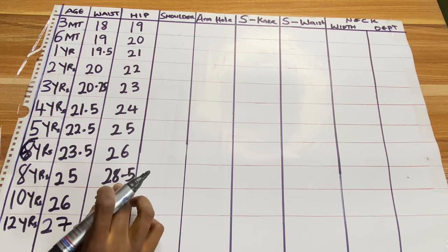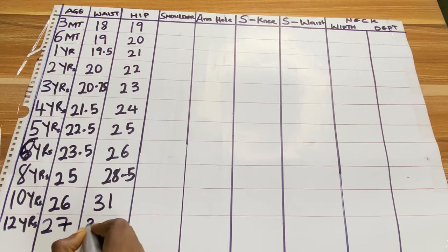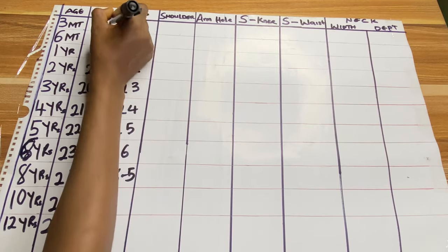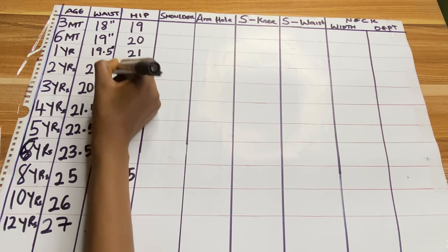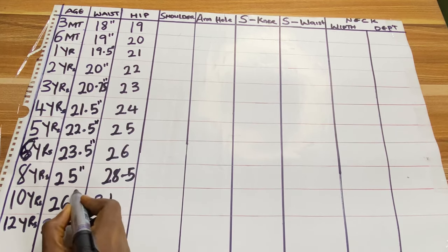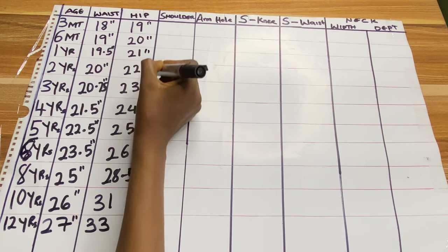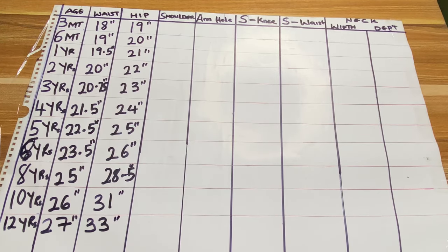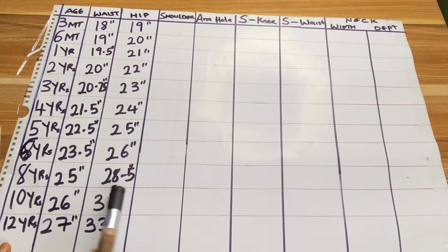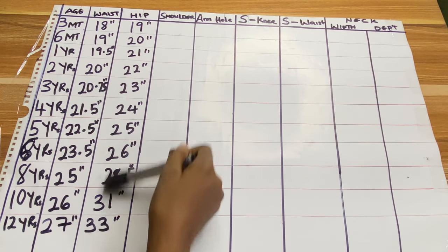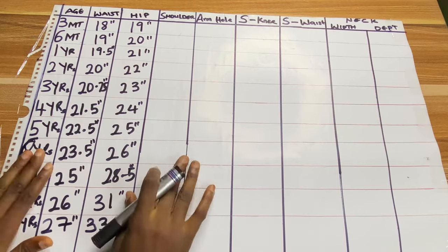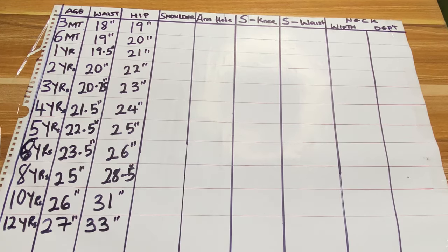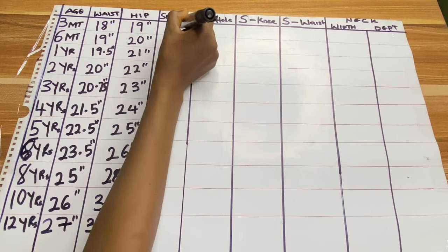For nine years you can use 30 or 31 inches, and for 11 years you can use 32 or 33 inches. These measurements are measured in inches — some people measure in cm or millimeter but this chart is in inches. You can see all the measurements already taken.